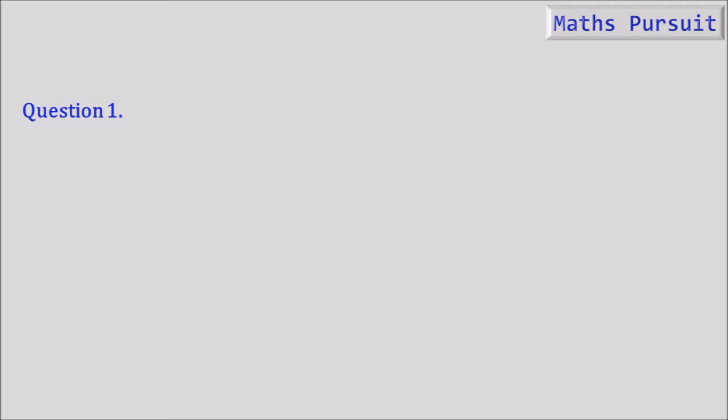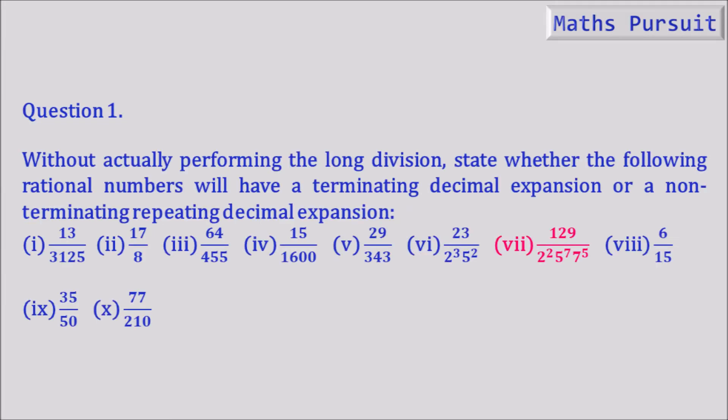In question 1 bit 7, it is given: without actually performing the long division, state whether the following rational numbers will have a terminating decimal expansion or a non-terminating repeating decimal expansion. The given number is 129 by 2 to the power 2, 5 to the power 7, and 7 to the power 5.